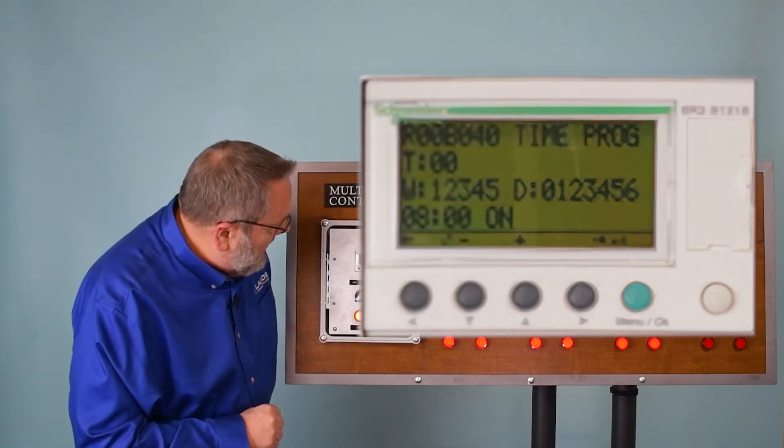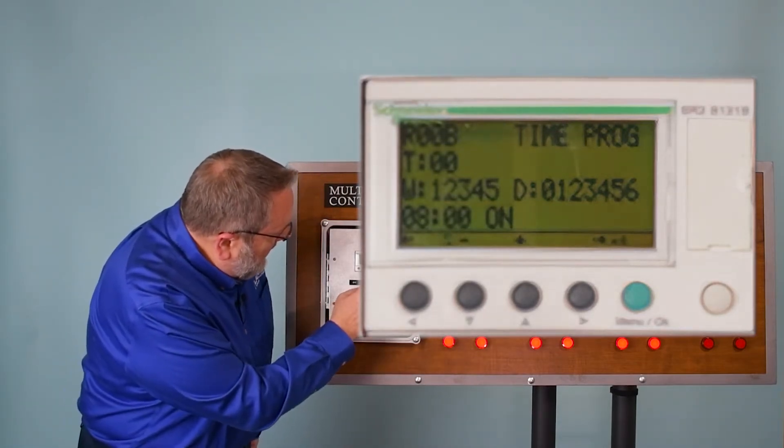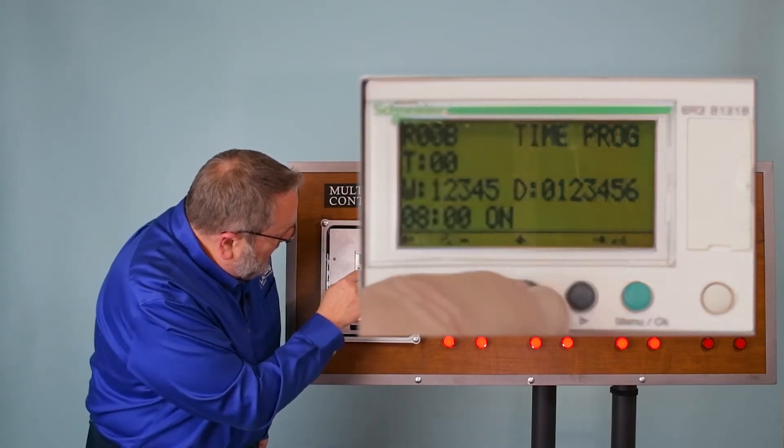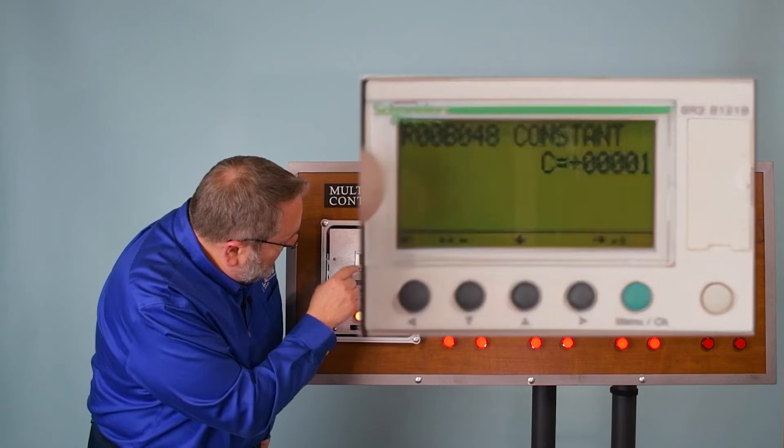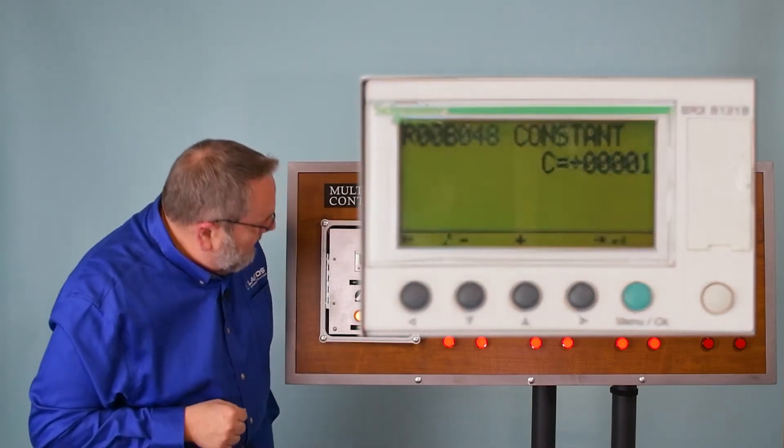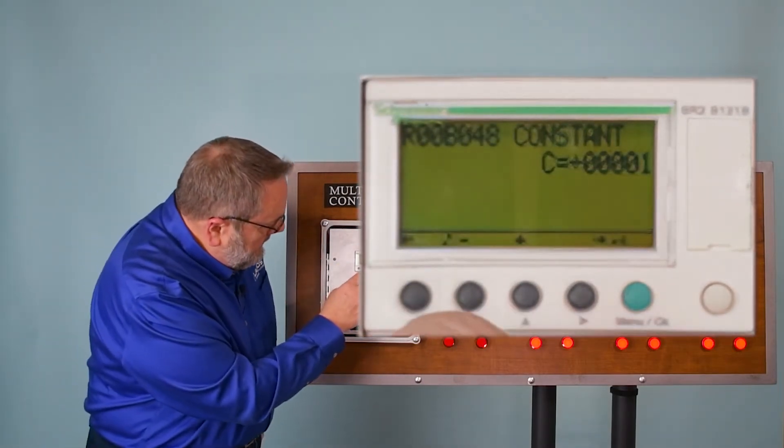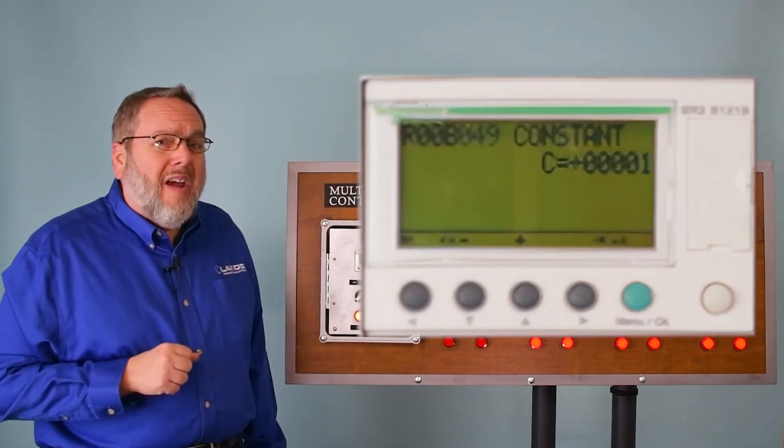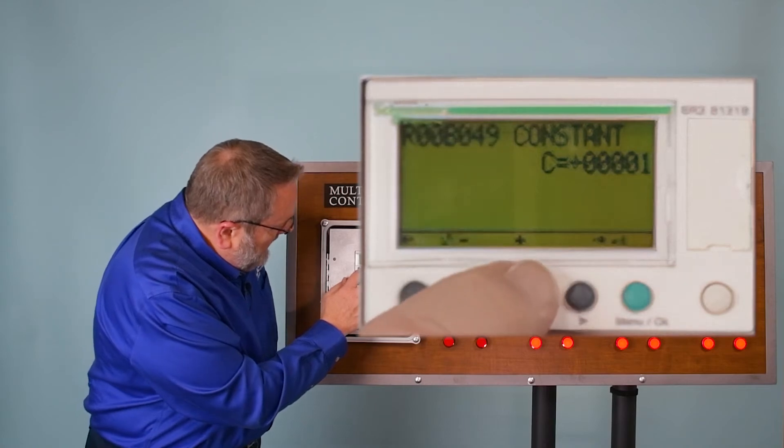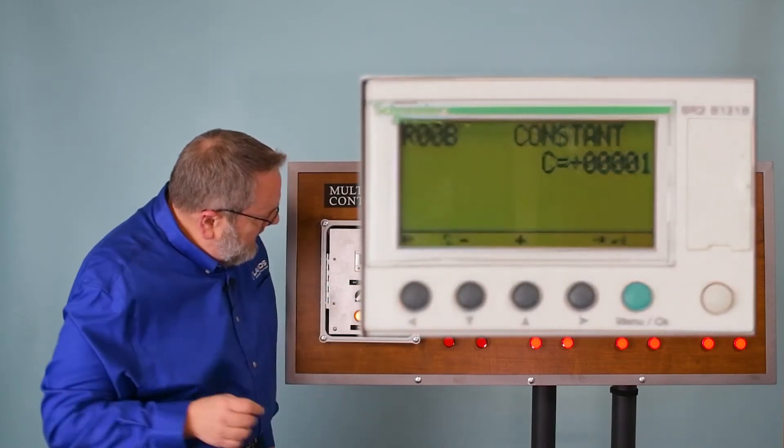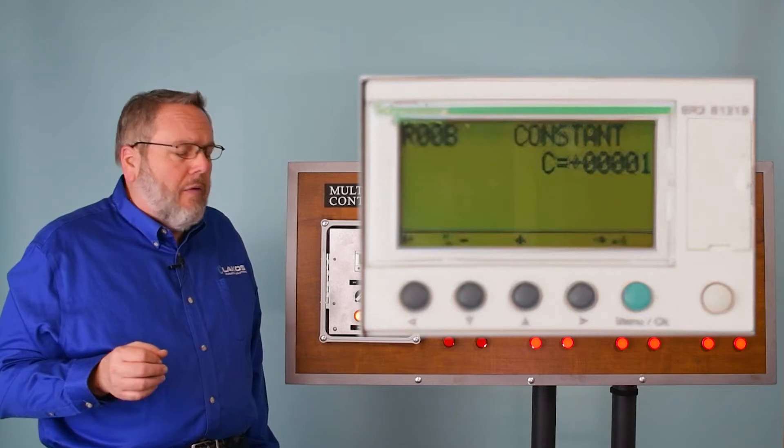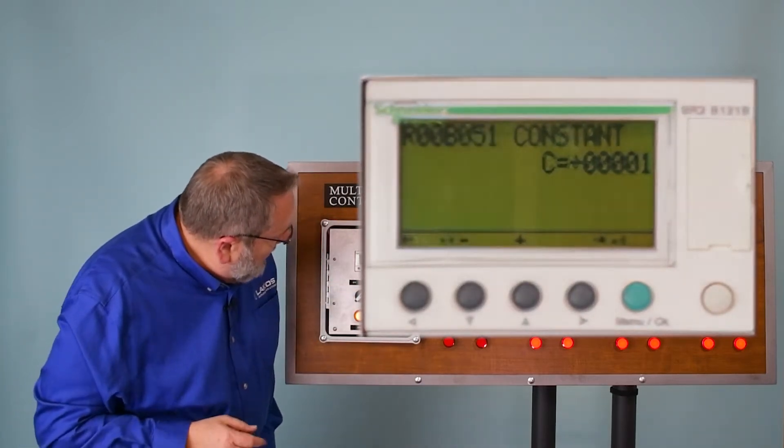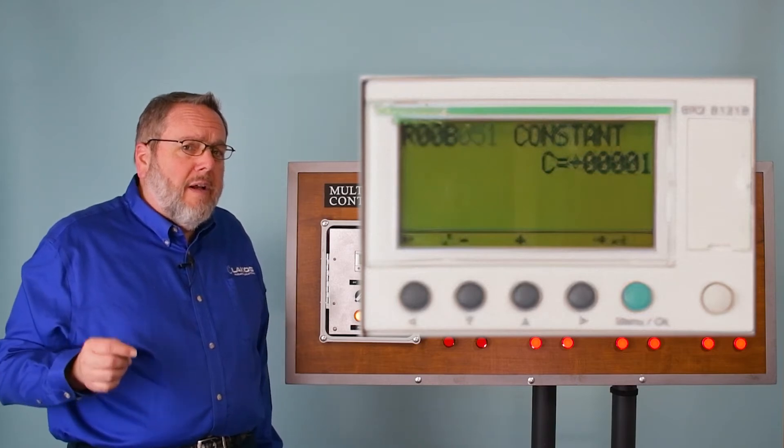So let's go to programming a tower. So what we're going to do is with the display blinking up at the top, we're going to go up arrow. 048 is tower one. We click up again, 049 would be tower two. Click up again, 050 is tower three. And lastly, click up one more time, 051 is tower four.